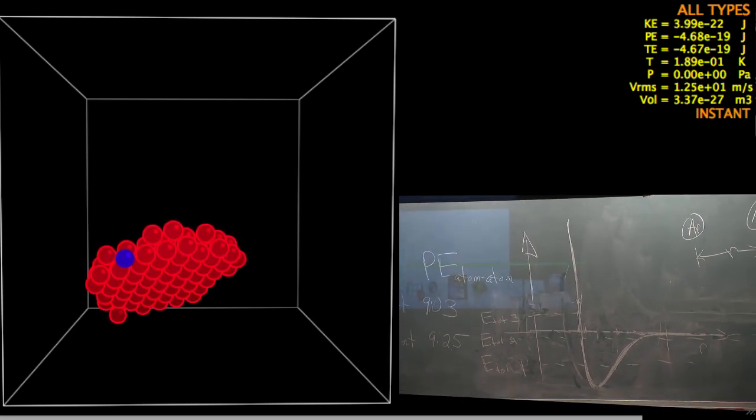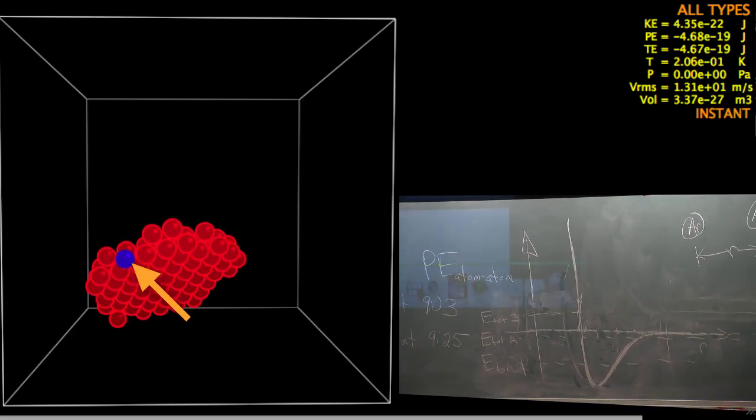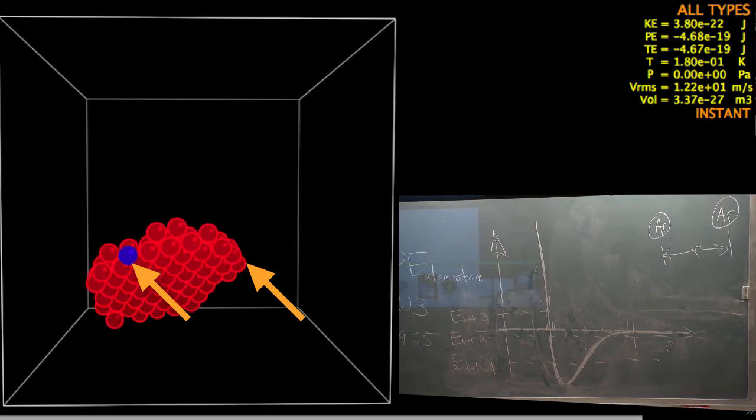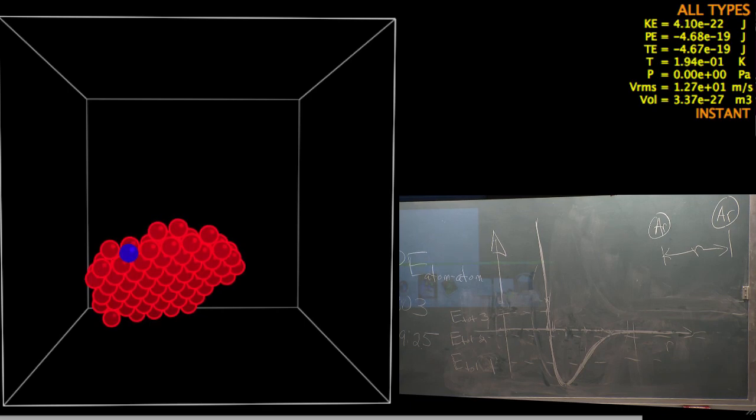The ones that are farther apart, like this blue one here and that red one way over there, those are so far apart on this scale that the potential energy is utterly and completely negligible. The potential energy is only really important for the ones that are close together.